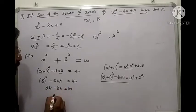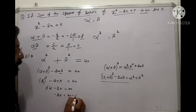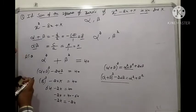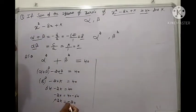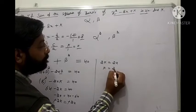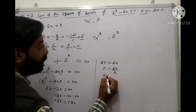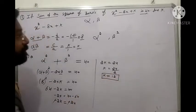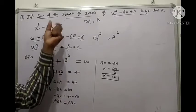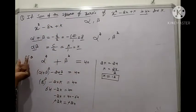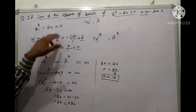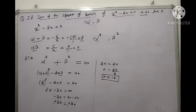Shifting terms: minus 2k equals 40 minus 64, so minus 2k equals minus 24, therefore k equals 12. We used sum and product to find the value of k. Now the next question.